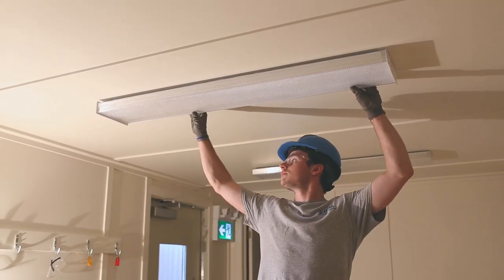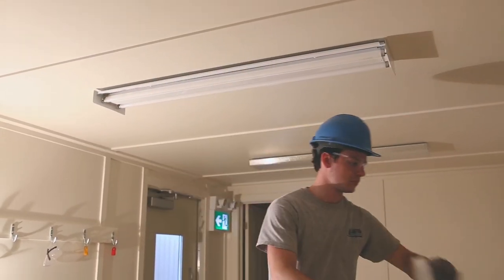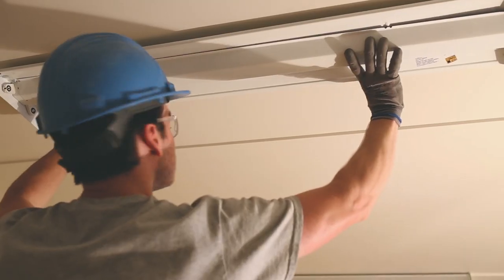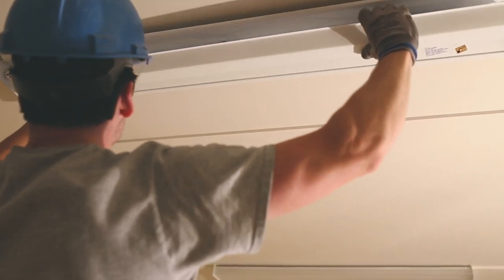Once you've disconnected the power to the light, you want to go ahead and start to remove the shade from the light and remove your tubes and your ballast cover. This will show you all of the bare wires and the ballast itself inside the light.